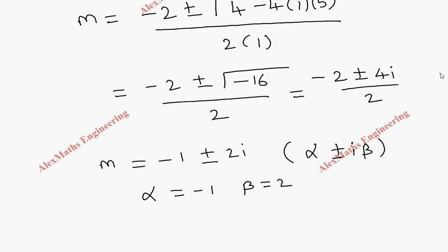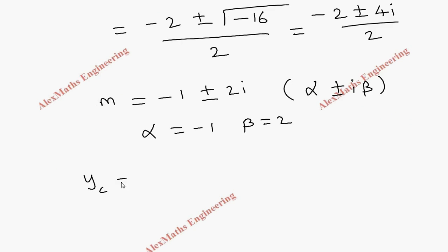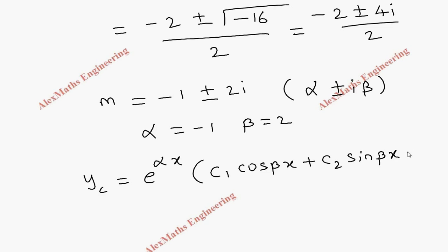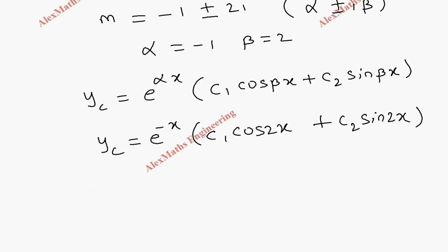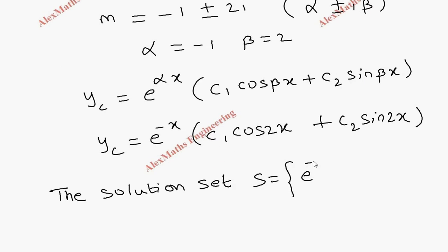For this form, the complementary function is e^(αx)(C1·cosβx + C2·sinβx). So the complementary function is e^(−x)(C1·cos2x + C2·sin2x). The solution set has two elements: e^(−x)·cos2x and e^(−x)·sin2x.